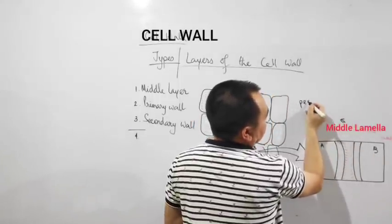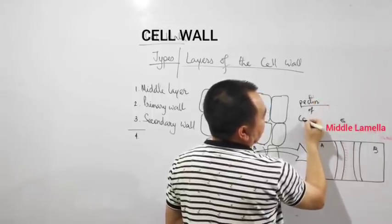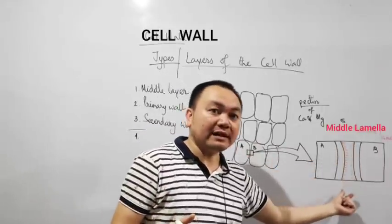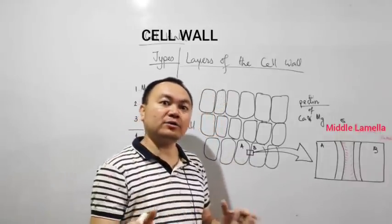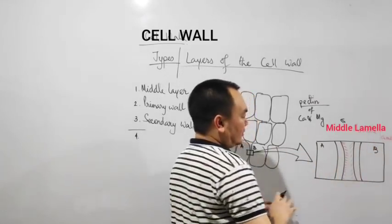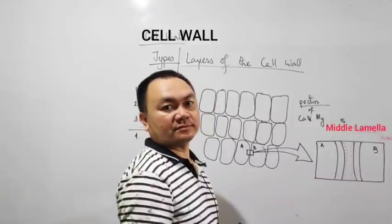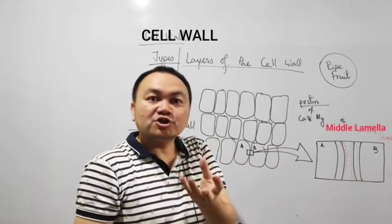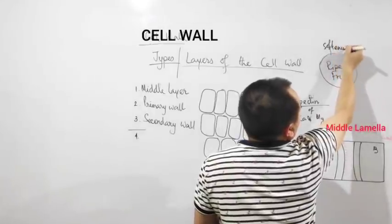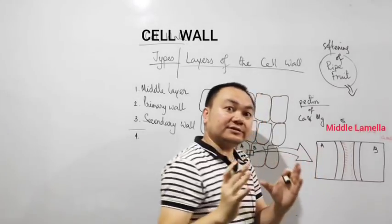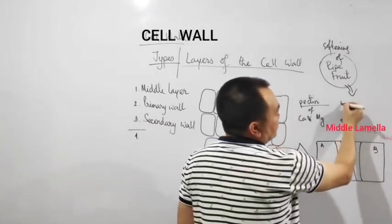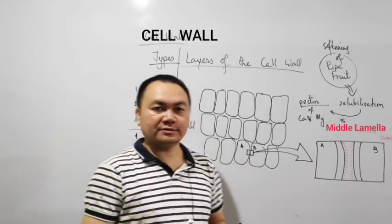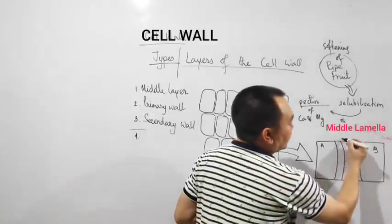Middle lamella is made up of pectin compounds of calcium and magnesium. And due to the presence of these calcium pectins and magnesium pectins, the middle lamella is responsible for hardness of plants, hardness of plant tissues. Like you take any plant part, you press it, it is hard due to these substances. However, when the fruit is ripe, it becomes soft. Why? Softening of ripe fruits is due to certain plant hormones which solubilize these compounds. They cause softening of ripe fruits. So this is the middle layer part.